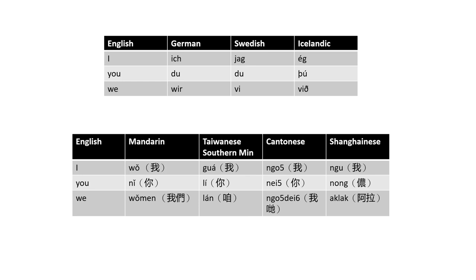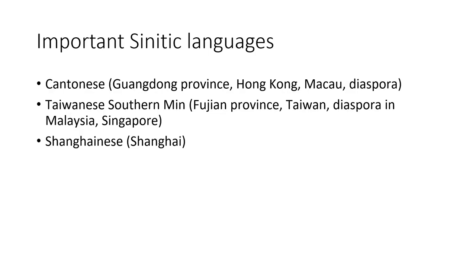How different are these Sinitic languages? As an example using pronouns — I/you/we — in Germanic languages (English: I, you, we; German: ich, du, wir; Swedish: ja, du, vi; Icelandic: ég, þú, við) they sound fairly similar. But in Mandarin: wǒ, nǐ, wǒmen — 'we' is very different. In Taiwanese: guá, lí, dán. In Cantonese: ngó, néih, ngóh-dei. In Shanghainese: ngu, nong, ala — they use a completely different pronoun for 'you' and 'ala' for 'we.' These Chinese languages have very different pronouns.